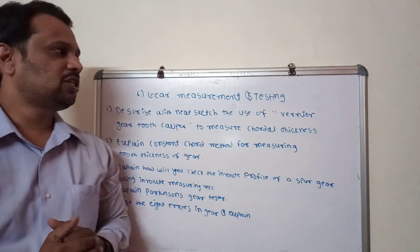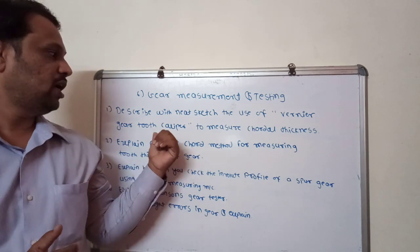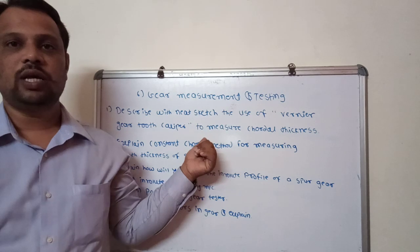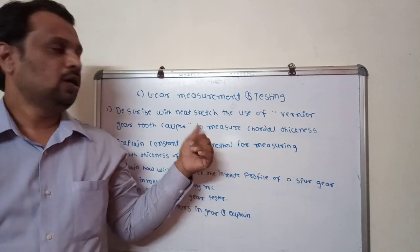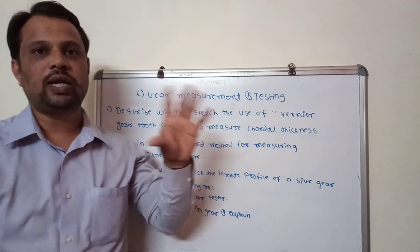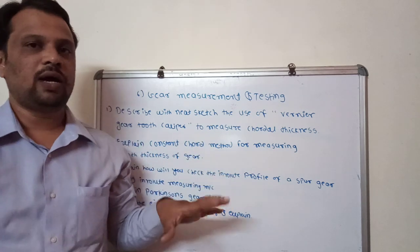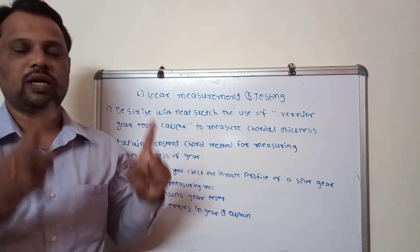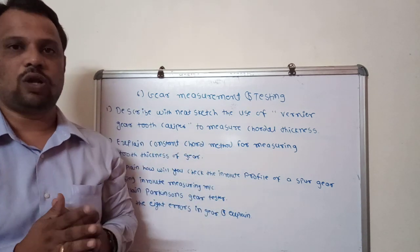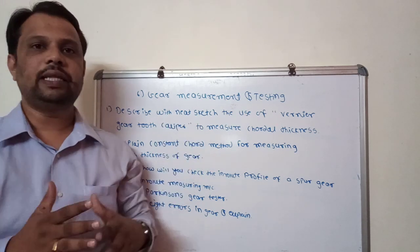The first question is: describe the use of a vernier gear tooth caliper to measure chord thickness. In this question, you have to draw the diagram of the gear tooth vernier caliper, then draw one gear tooth and explain all the procedure. This question is somewhat lengthy.